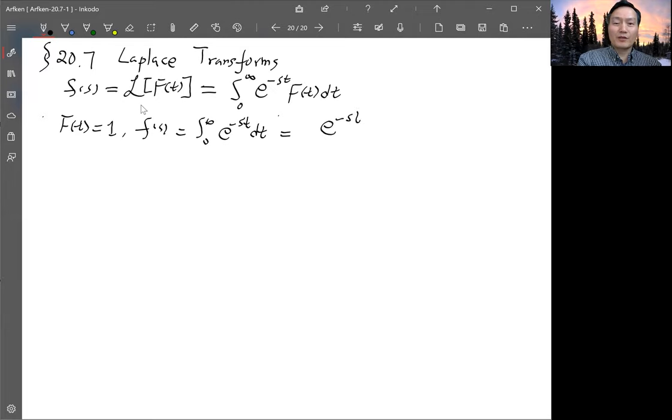Then f would be just integrating the exponential function, which is straightforward. Integrated exponential function is an exponential function. All you need to do is divide it by one over s. If I have zero to infinity, at infinity is zero because of the power, assuming s is positive. So what you get is one over s. This is equation 20.129.